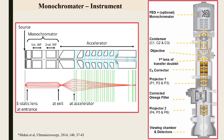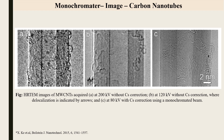The monochromator system filters the beam and minimizes energy spread. It is placed after the source and before the accelerator. For example, comparing image A imaged at 200 kV without spherical aberration correction, image B at 120 kV without spherical aberration correction — where delocalization is indicated by arrows — and image C at 80 kV with spherical aberration correction using a monochromated beam: comparing A and B, B is far better; and the third system with monochromated beam and aberration correction gives the best atomic contrast, for example around carbon nanotubes.